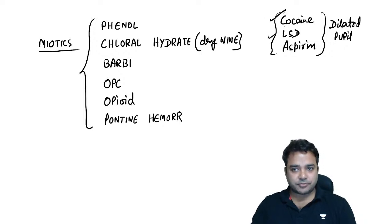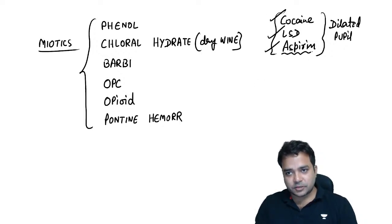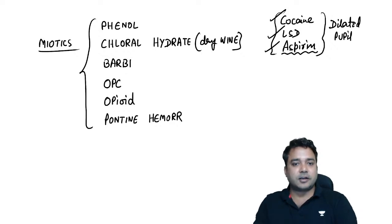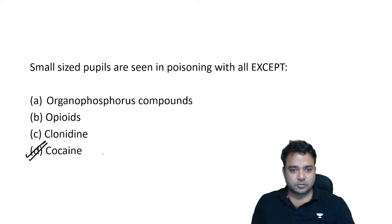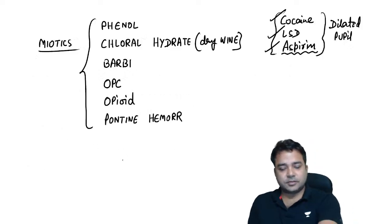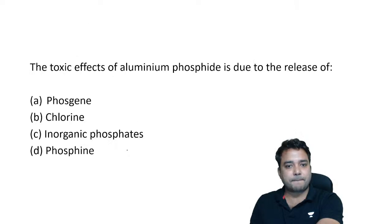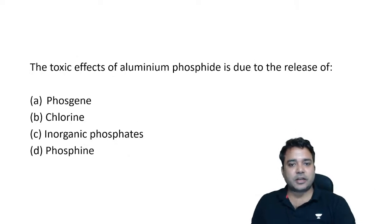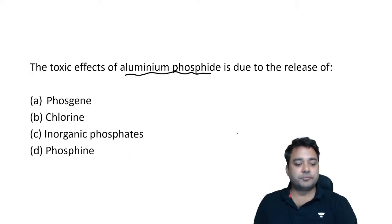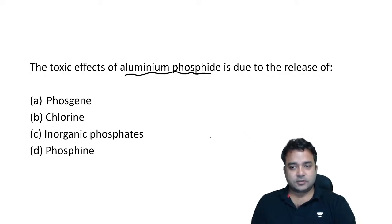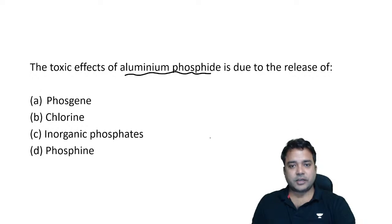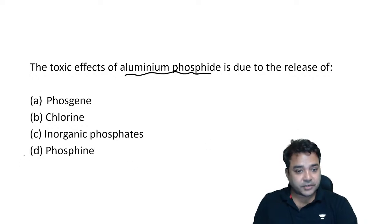Aspirin toxicity is repeatedly asked in CMS exams. The toxic effects of aluminium phosphide are due to the release of phosphine gas — not phosgene, which is a distractor option. Aluminium phosphide comes to market under the names Celphos or Alphos, and these cases do come to casualty.